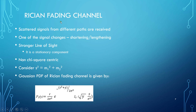Rician fading channel: Scattered signals from different paths are received, and one of the signals either shortens or lengthens. This occurs when there is a stronger line-of-sight component in Rician fading. The line-of-sight is a stationary component. Unlike the Rayleigh fading channel, the Rician fading channel is non-central chi-squared. Consider the equation s² = m1² + m2², where m1 and m2 are random Gaussian variables. The Gaussian probability distribution function of the Rician fading channel is given as shown.